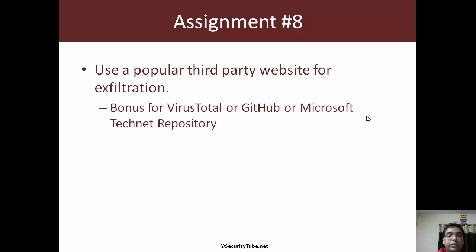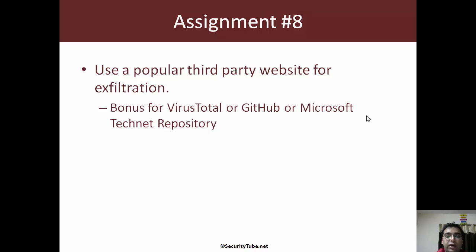Assignment number eight: use any popular third-party website for exfiltration. Pick a website of your choice — make sure it is one of those generally allowed through proxies and web filters. Using their documentation and APIs, write a PowerShell script which is able to exfiltrate data to that third-party website. Bonus points for using VirusTotal, GitHub, or Microsoft TechNet repository for this purpose.